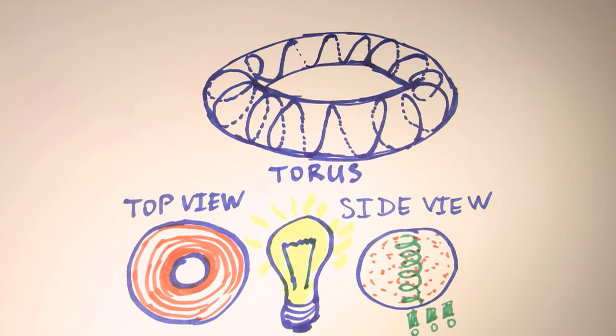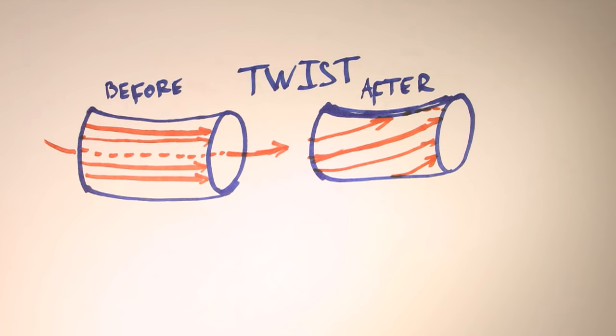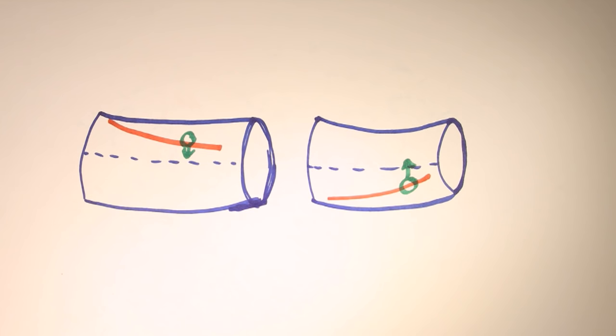Fortunately, there is a solution. We just have to twist the magnetic lines. Every line now is somewhere on the upper side and somewhere on the lower side. That means particles would move somewhere upward, somewhere downward, thus creating a macroscopic equilibrium.